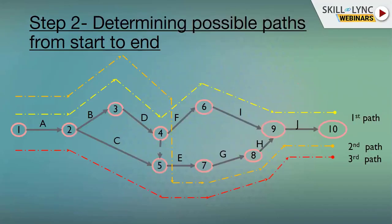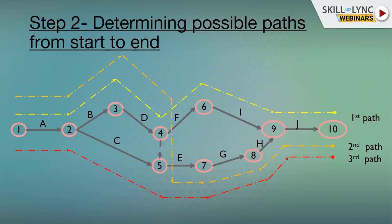There are three paths possible as we go from event one to event ten. They are represented by three lines — orange, yellow, and red. Path number one will go from one, having activities A, B, D, F, I, and J. Path number two will have activities A, B, D, then dummy activity, E, G, H, and J. The third path will have activities A, C, E, G, H, J.